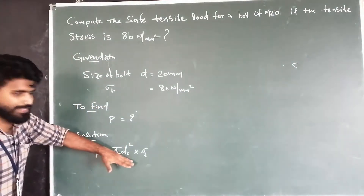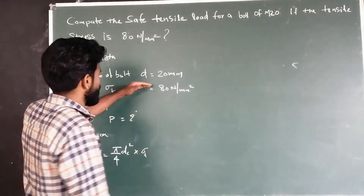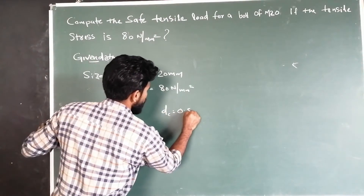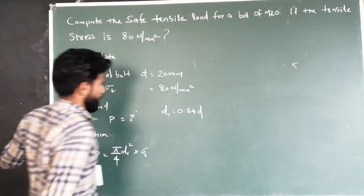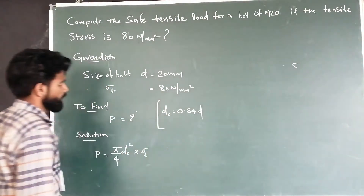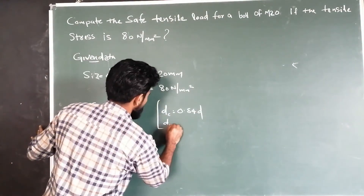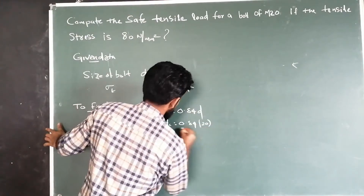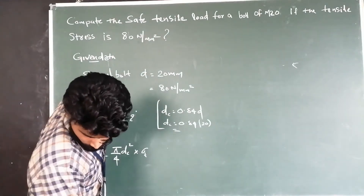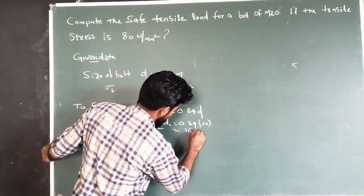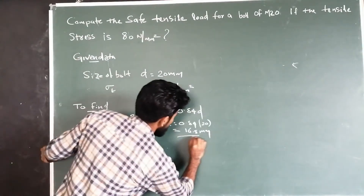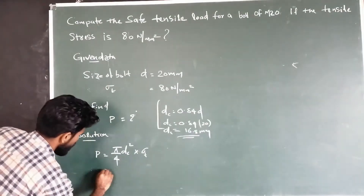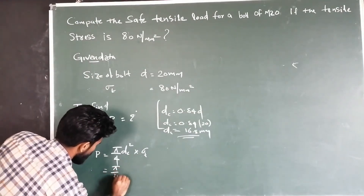We call dc the root diameter. dc is equal to 0.84 times d. So dc is equal to 0.84 into 20, which gives dc equal to 16.8 mm. Now we apply dc into the formula: pi by 4 into dc squared.